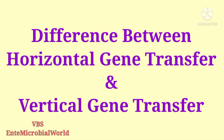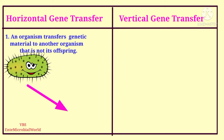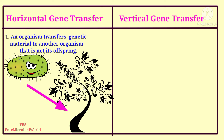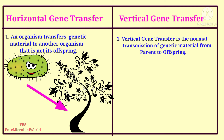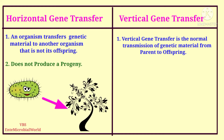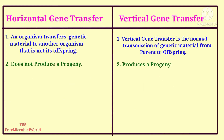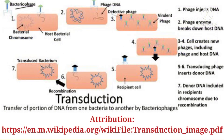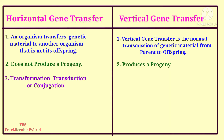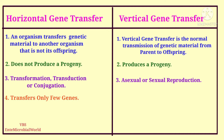Now let's see the difference between horizontal gene transfer and vertical gene transfer. Horizontal gene transfer is a process in which an organism transfers genetic material to another organism that is not its offspring, while vertical gene transfer is the normal transmission of genetic material from parent to offspring. Horizontal gene transfer does not produce a progeny, whereas vertical gene transfer produces a progeny. Horizontal gene transfer occurs through transformation, transduction, or conjugation, while vertical gene transfer occurs through asexual or sexual reproduction.